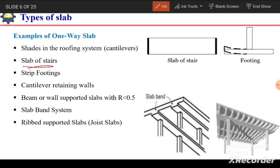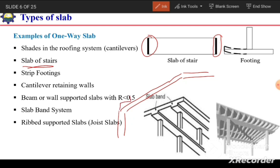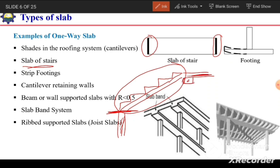Stair slabs are another example. The slab of a stair is normally supported at its two ends — at the start and end of the stair — by a vertical wall and a horizontal slab, sometimes with a beam. Because it is supported at its ends, it is considered a one-way slab bending in the direction of the stair span.